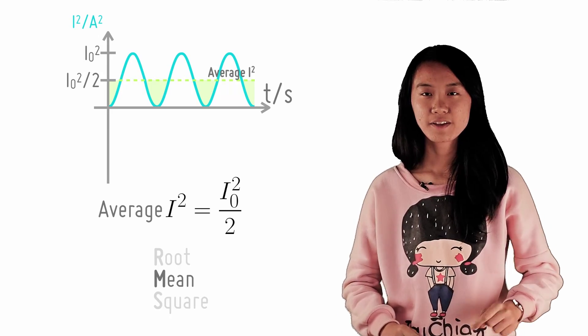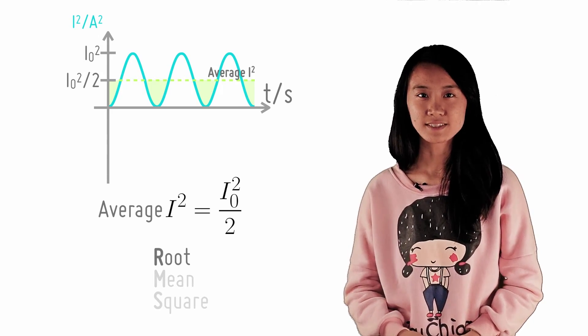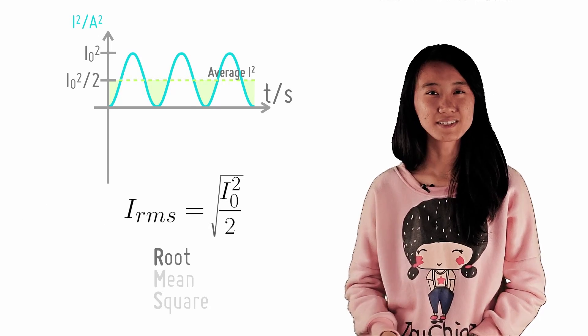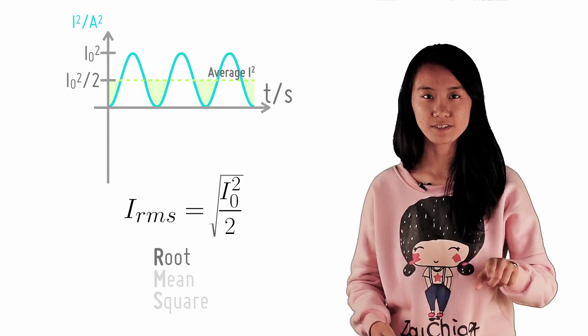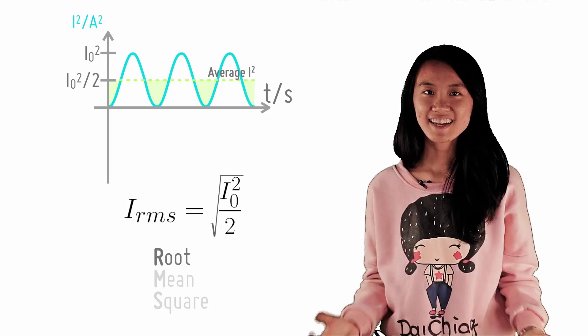Now we square root this value to get I_rms equals square root of I₀²/2 which is simply I₀/√2. Ta-da! You got it!